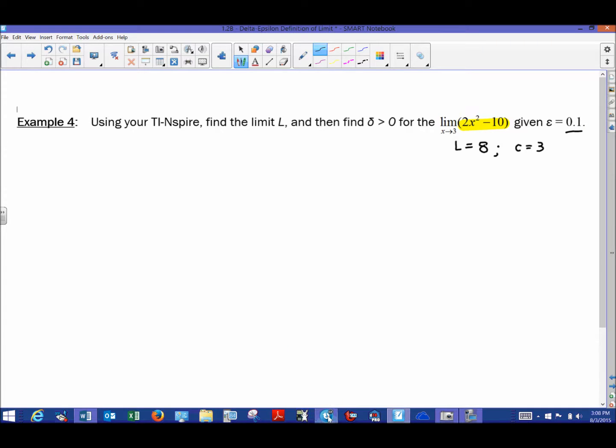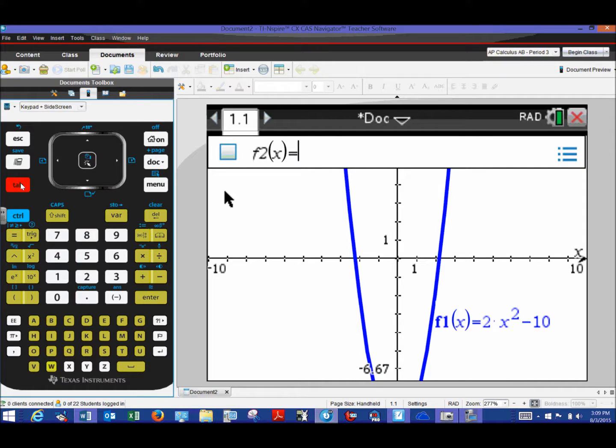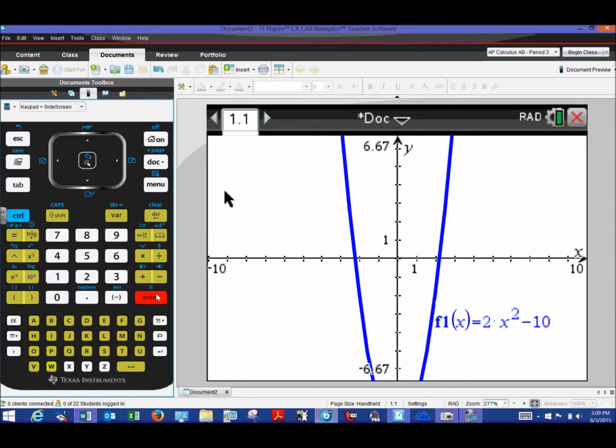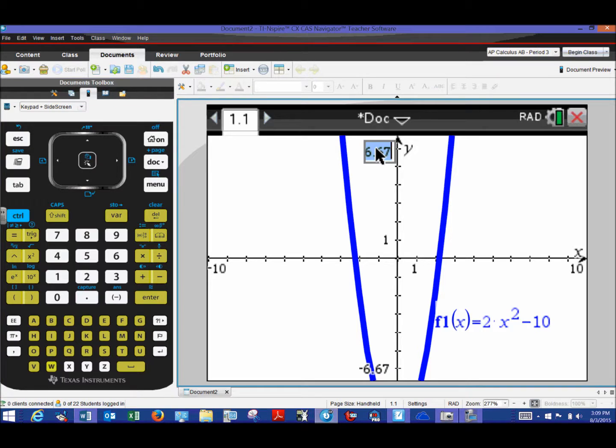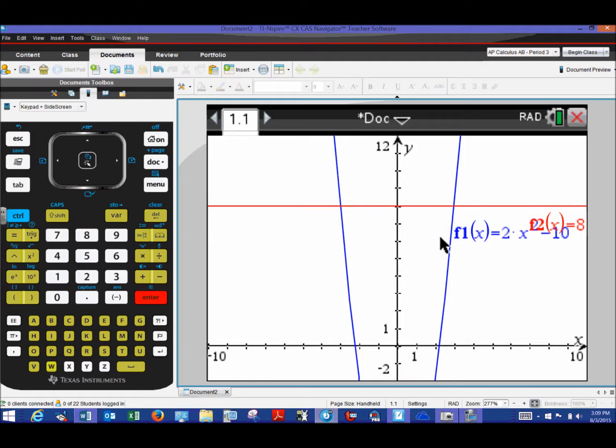So we're going to return to our document and I want us to go ahead and graph the limit, the answer 8 that we would get. I'm going to hit tab to bring up our graph entry line and I'll enter 8 and we'll see a horizontal line if we had the right scale. No big deal, we're going to make some alterations here. I'm going to take this guy up to 12 and bring the bottom of this up a little bit to negative 2. We can make some adjustments later.